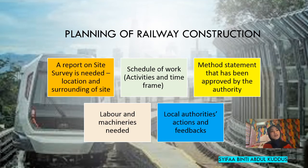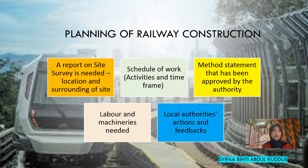Next is planning of railway construction. First, a report on site survey is needed for the location and surroundings of the site. Second is a schedule of work that includes activities and time frame for the construction. Third is providing a method statement that has been approved by the authority. Number four, labour and machineries are needed for the construction. Lastly, local authorities' actions and feedback are important.